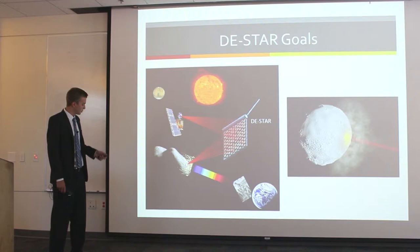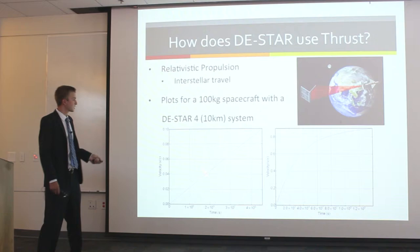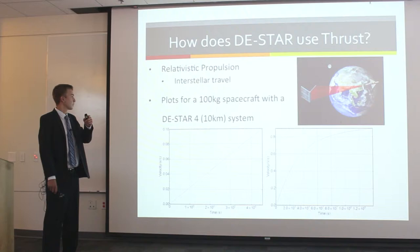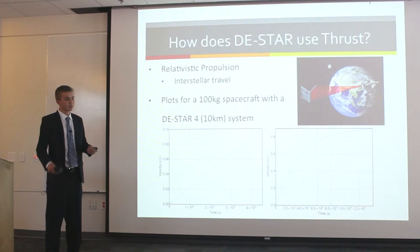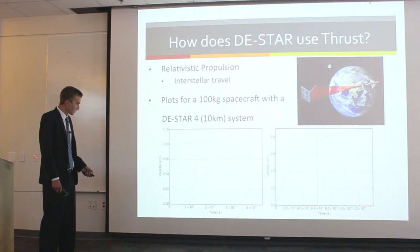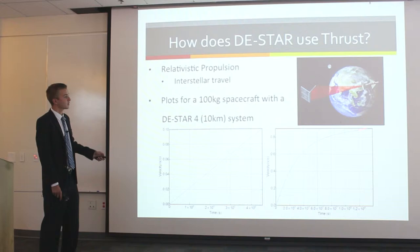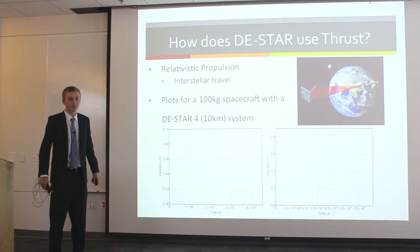Here are some theoretical calculations. For the first 46 days of a laser shooting at a reflector — a DSTAR 4, which would be 10 kilometers, which is really big and really in the future — after 46 days we start approaching relativistic speeds and soon reach the relativistic limit. This would allow us to leave our solar system and start exploring the universe.